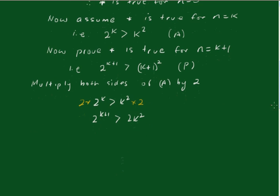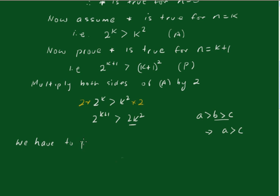Now, if a is greater than b, and b is greater than c, this implies a is greater than c. So I've got to show that 2k squared is greater than k plus 1 all squared. So if that is greater than that, then 2 to the k plus 1 will be greater than k plus 1 all squared. So we have to prove that 2k squared is greater than k plus 1, all squared.